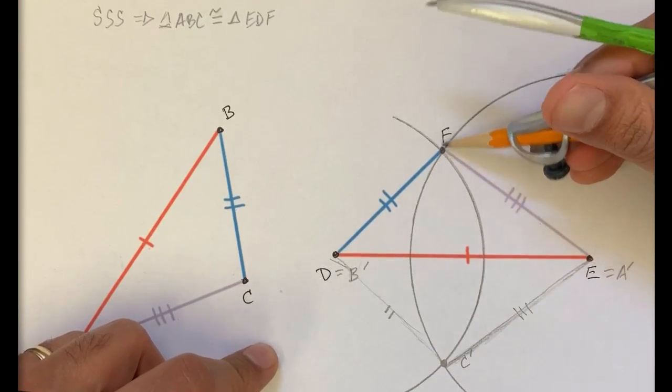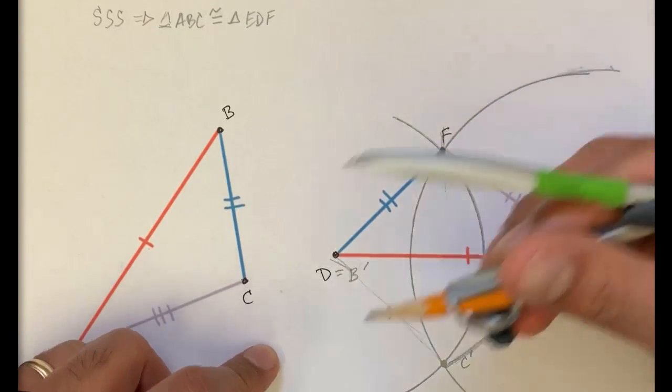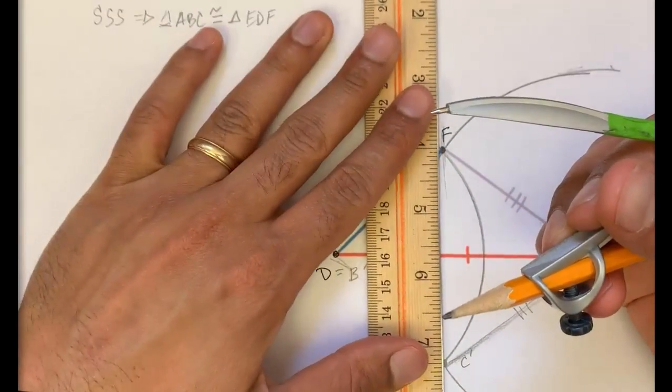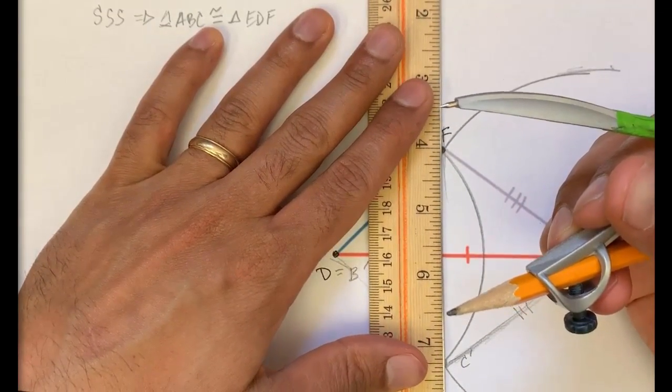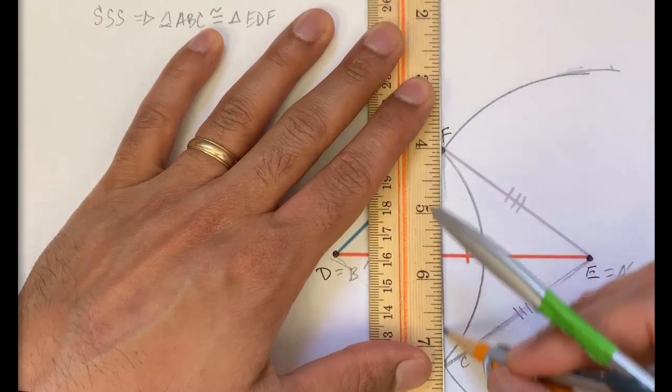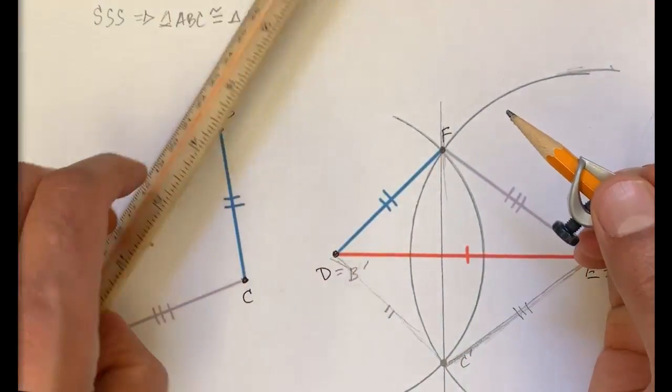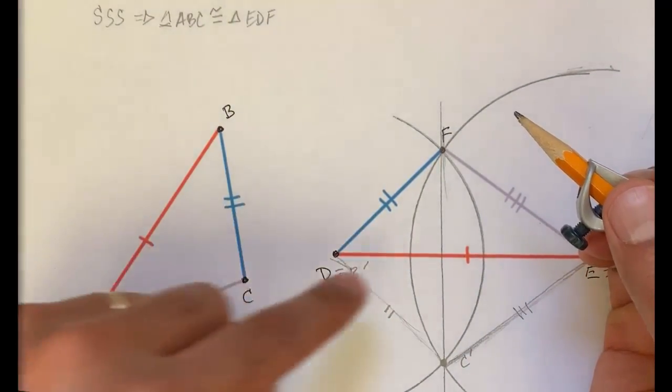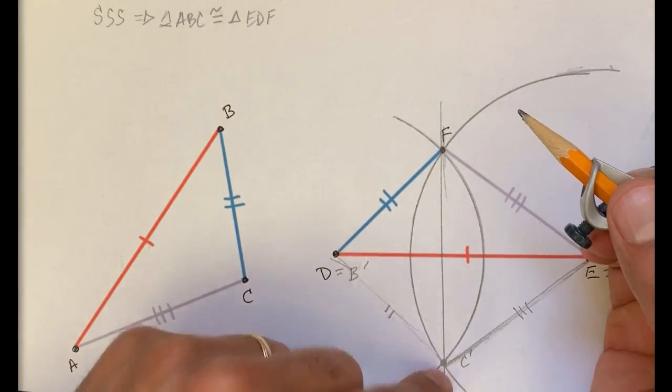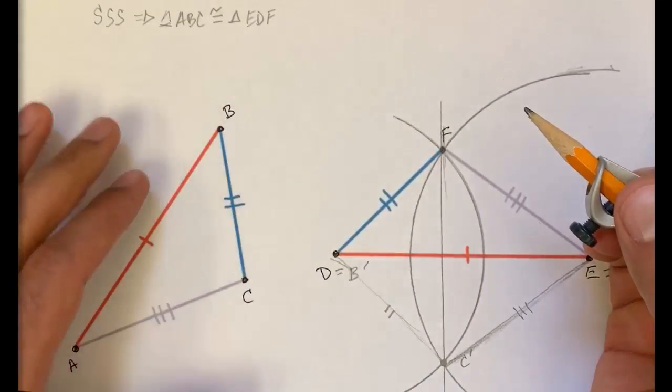And so one way to think about it, imagine a line between F and C prime. Let me get my straight edge here so it looks a little bit neater. Imagine a line that connects F and this C prime. And once again, we're in the case where C prime immediately didn't go to F, where C prime ended up being on this side, so to speak.